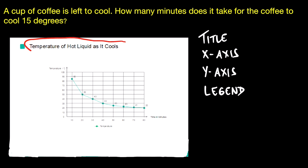Here it's telling you that this graph represents temperature of hot liquid as it cools. Then the second thing you want to do is look at the x-axis, which is the horizontal line. In this case, the x-axis is looking at minutes.